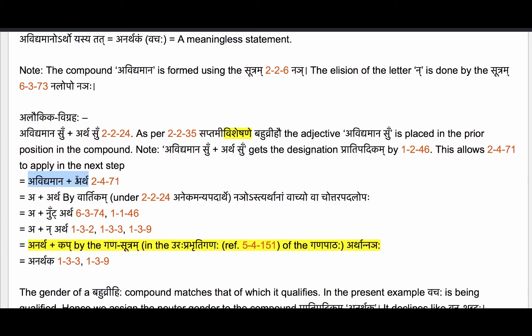Now we get Avidyamana plus Artha, and then by the Vartikam Nanyasthyrthana Vachovachotarapada Lopaha — this Vartikam is under Sutram 2.2.24 Anekam Annipadharthe — the Uttarapadam Avidyamana takes lopaha. So the term Vidyamana takes lopaha. Now Sutram 6.3.74 Tasmanudachi applies to attach the augment Nut to the Uttarapadam Artha, which begins with a vowel.